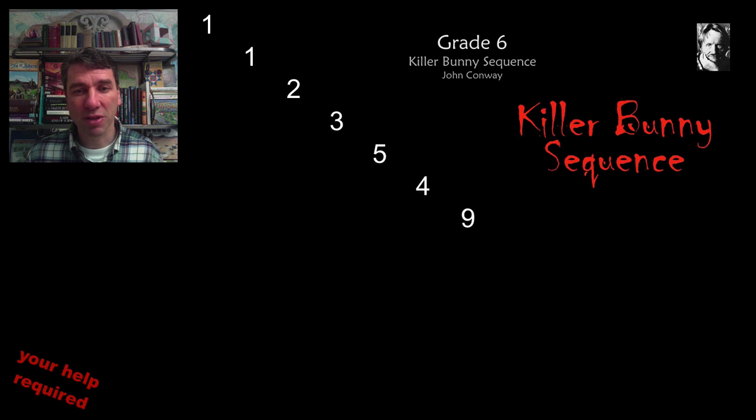And the next, that would be 5 plus 4 is 9, and 9 is also composite. That's 3 times 3 divided by its smallest composite number, so that's 3, and we end up with 3. So we can keep on going with this sequence.